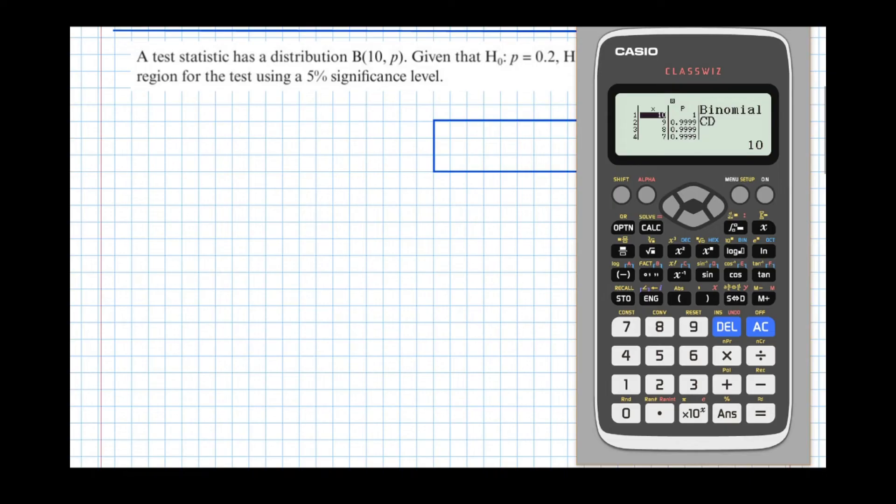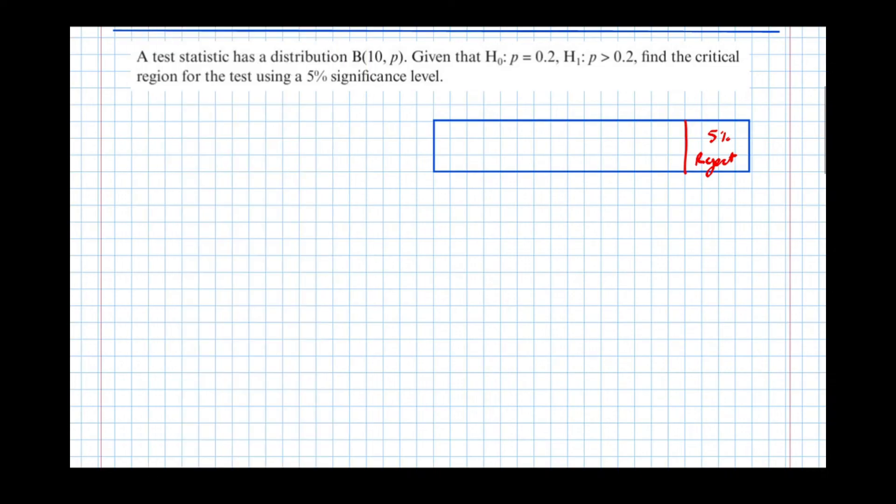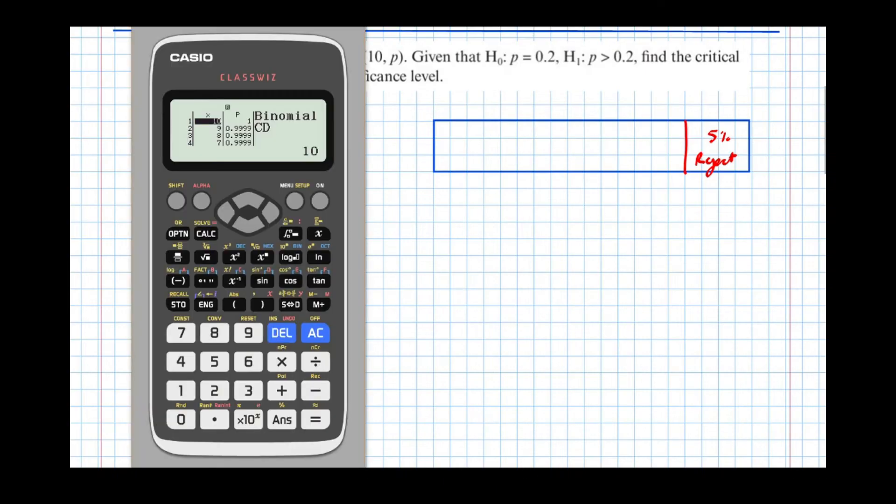So it's calculating them all. This time we're looking at probability to the right. But the calculator only gives us less than or equal to, probability to the left. So if the probability to the right that we want is 5%, then the probability to the left must be 95%. So let's look for a crossing over the 95% boundary on the calculator. We can see it does there, between 4 and 3.